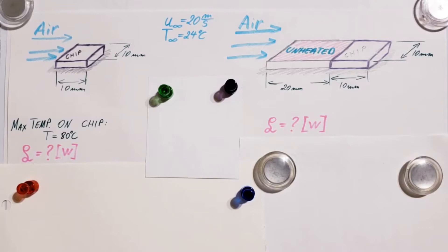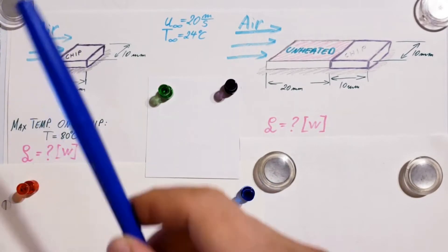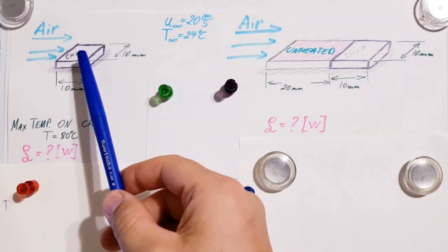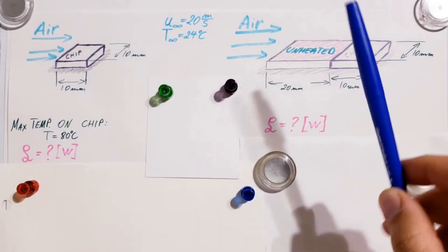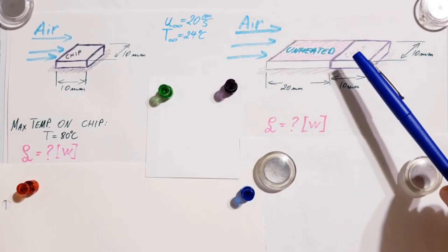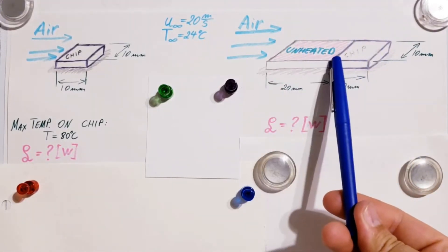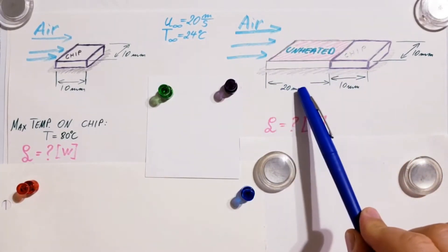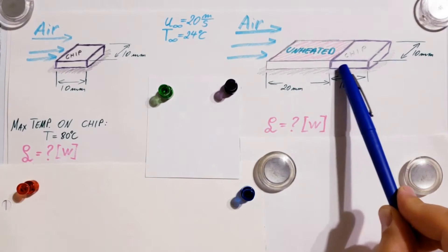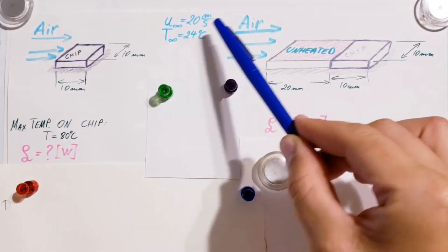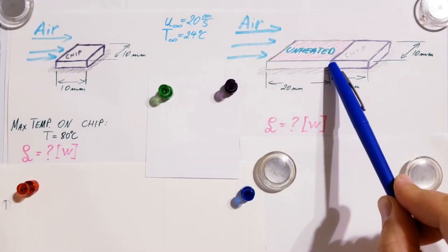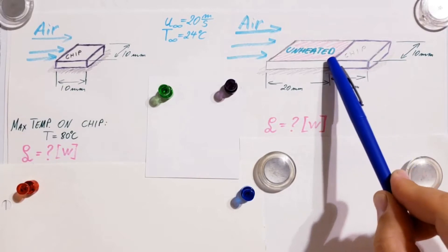They want us to find the maximum allowed power in two scenarios. The first is where the chip is just by itself. The second is when the chip is flush mounted in a substrate, giving it an unheated starting length of 20 millimeters. The air blows from one direction over the 20 millimeters of unheated substrate, and then reaches the chip which is heated.